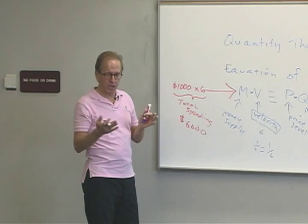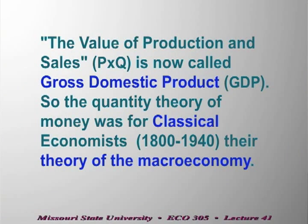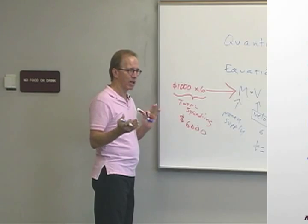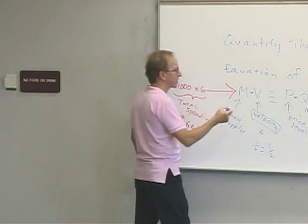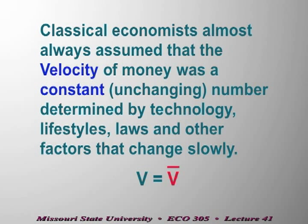The earliest economists who talked about this theory were the classical economists, about 100 to 200 years ago — this was their version of macroeconomics. The classical economists said velocity is a constant. In real life, we know that's not a constant, because velocity is really an indicator of money demand and will vary over time as interest rates change and as technology changes.